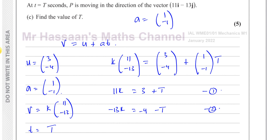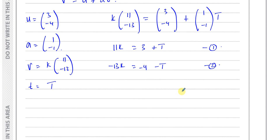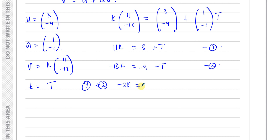To solve simultaneously, instead of making the k coefficients equal (which would require multiplying by 13 and 11), it's easier to eliminate t first by adding the two equations. Adding gives 11k + (−13k) = 3 + (−4), so −2k = −1, therefore k = 1/2.